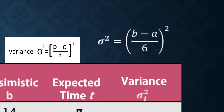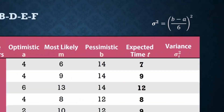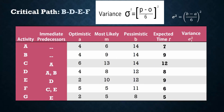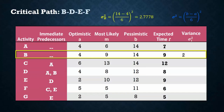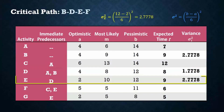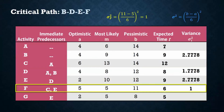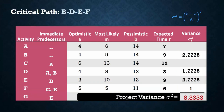The formula for calculating the variance for each activity is B minus A divided by 6, squared. Just like the project completion time can be found by adding up the expected activity times for critical activities, the project variance is also found by adding up variances for critical activities. So we only need to calculate the variances for critical activities. For B, the variance is 2.78. For D, it is 1.78. For E, 2.78. And for F, the variance is 1. Adding these, we have the project variance of 8.33.